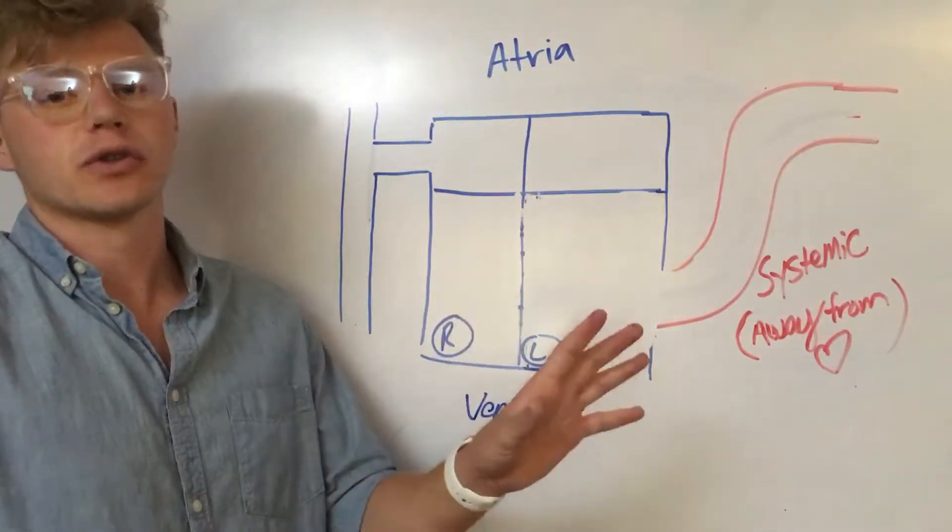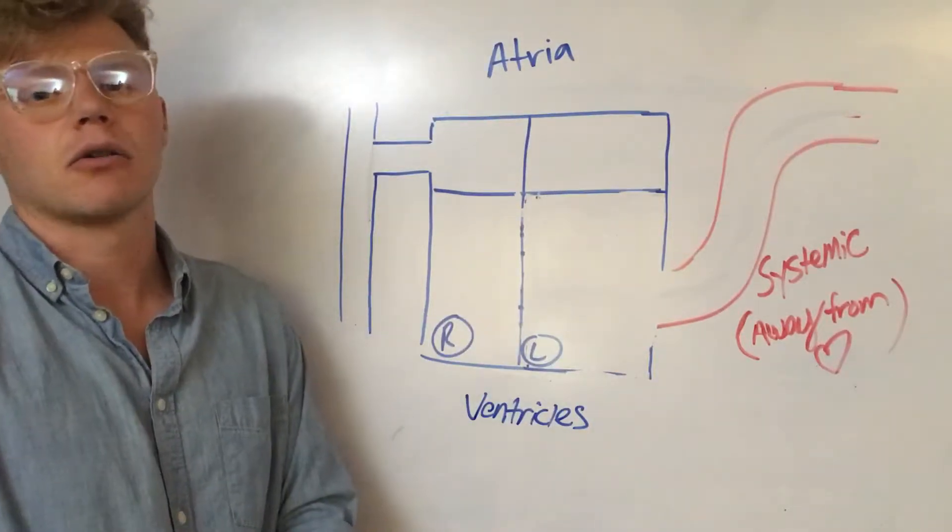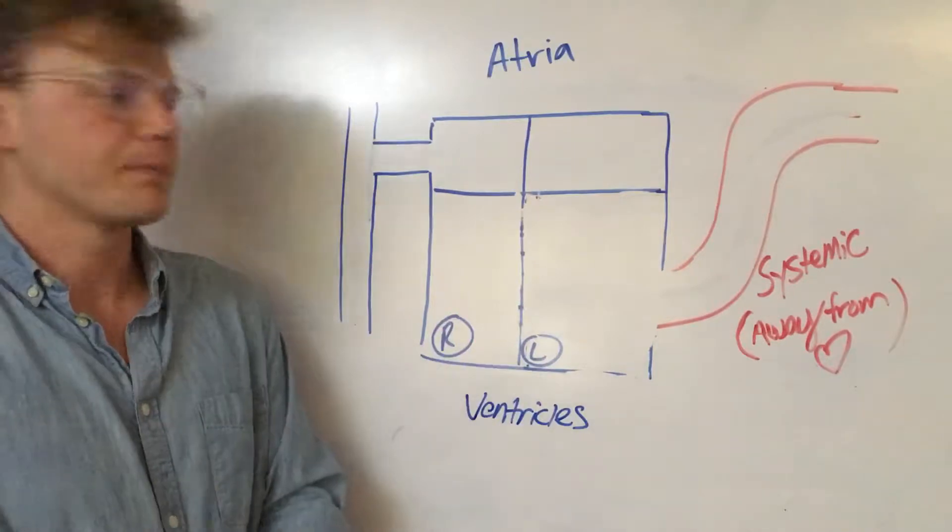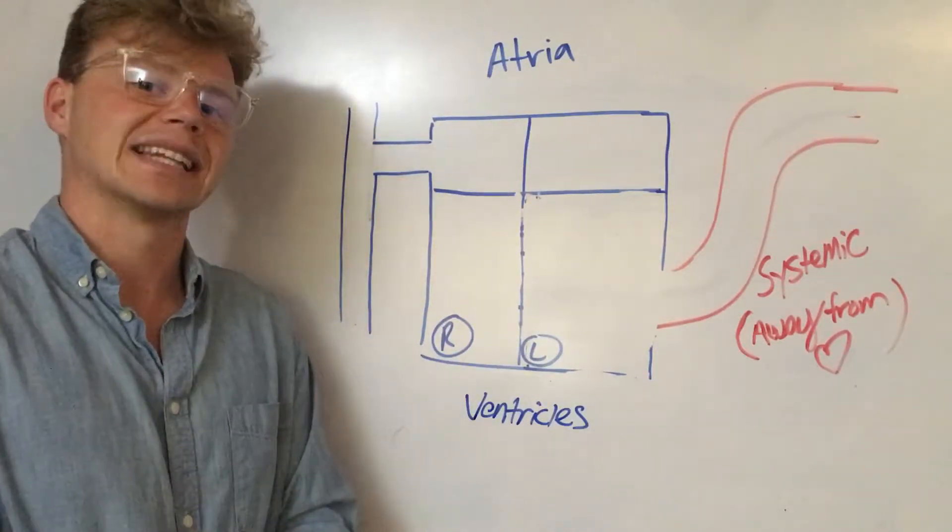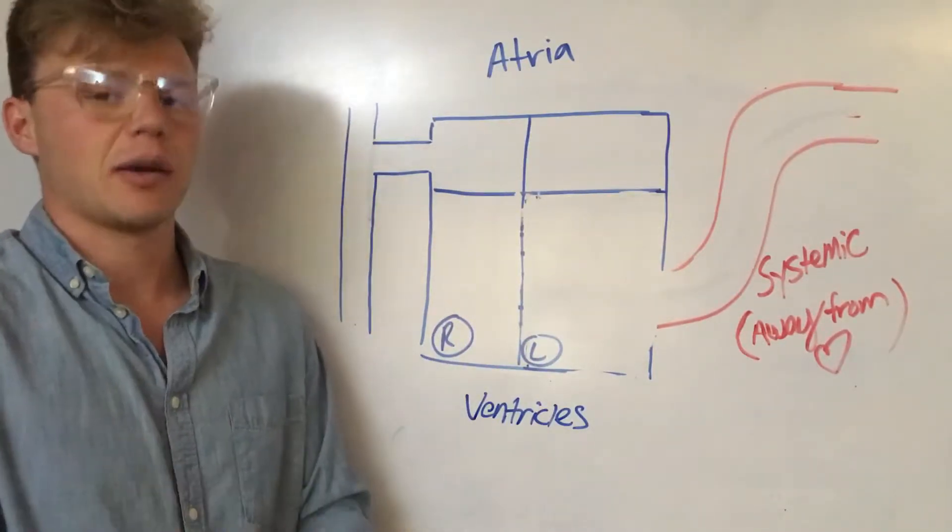One of the first signs you could see on an EKG or on an echocardiogram, which is an ultrasound of your heart, is something called left ventricular hypertrophy.